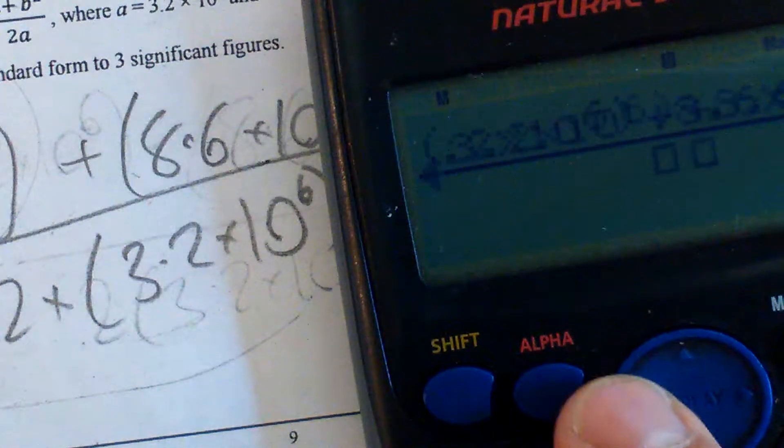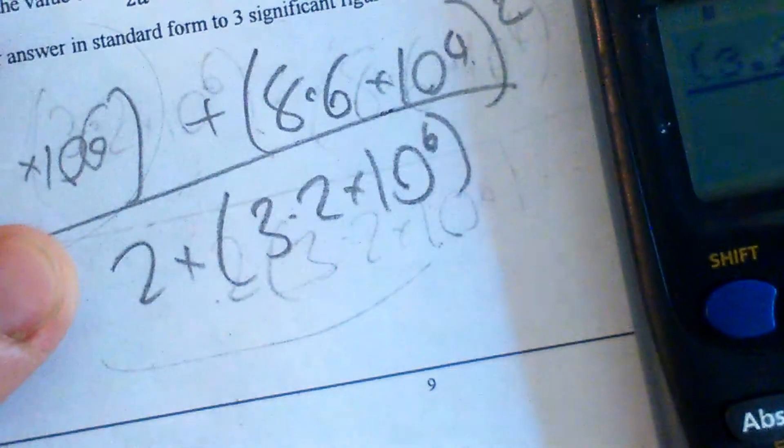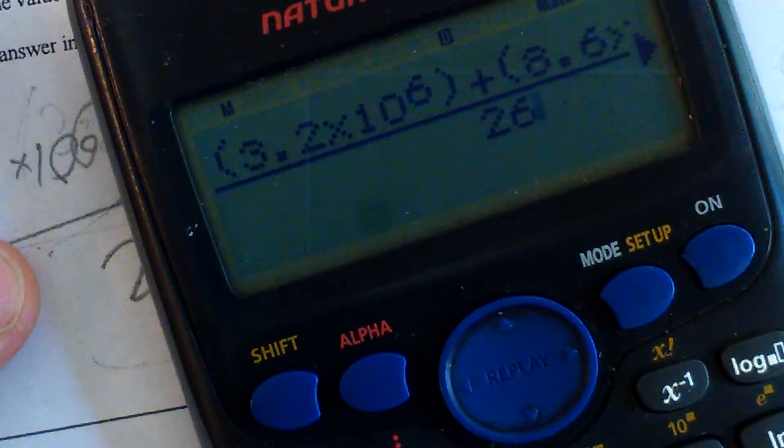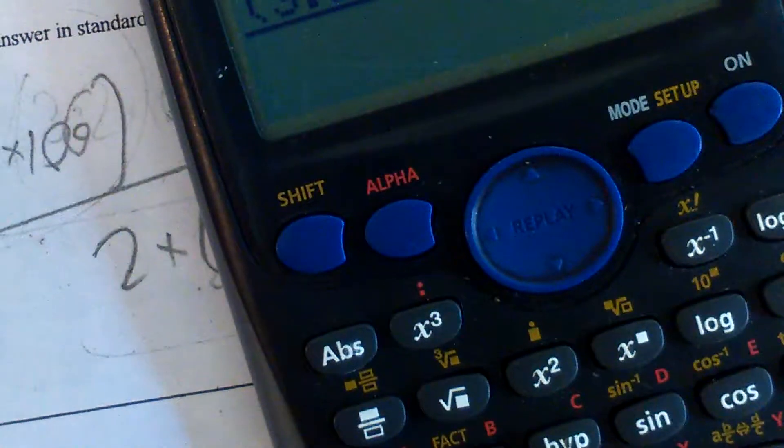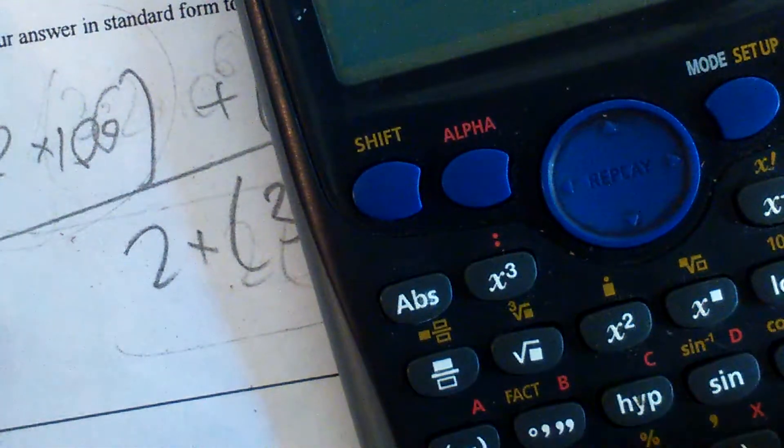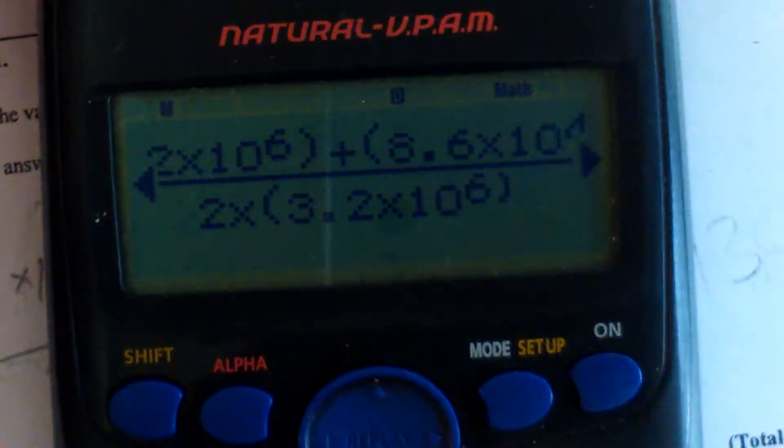I've got to put my brackets in so I do it properly. My denominator is 2 times, open your brackets, 3.2 times 10 to the power of 6. Let's make sure it sees it. Press equals.